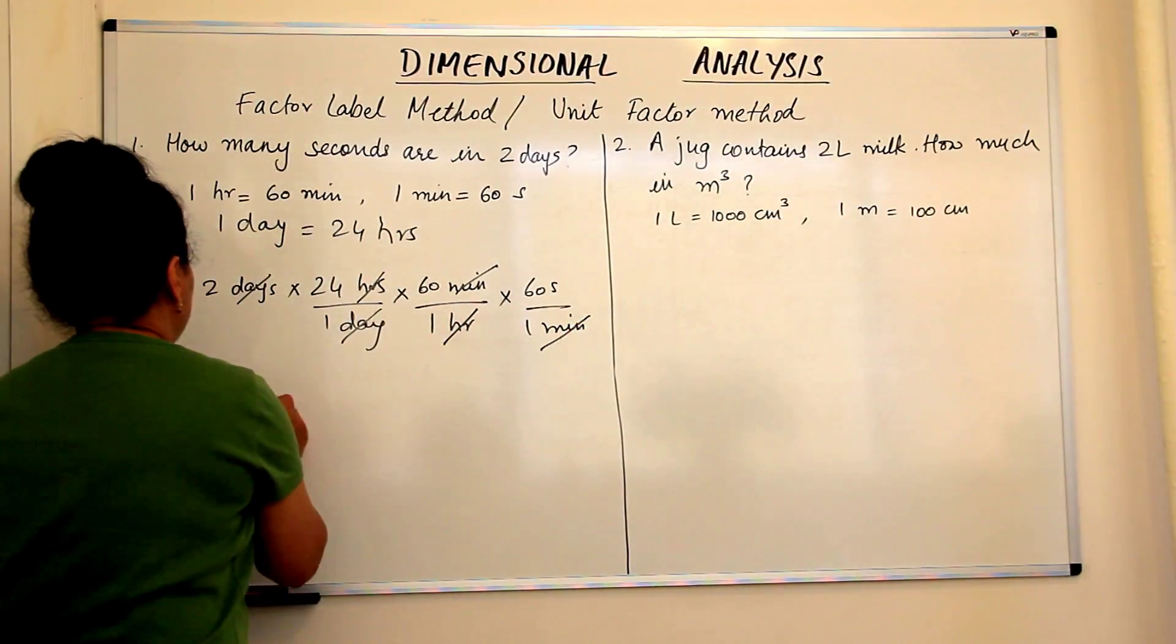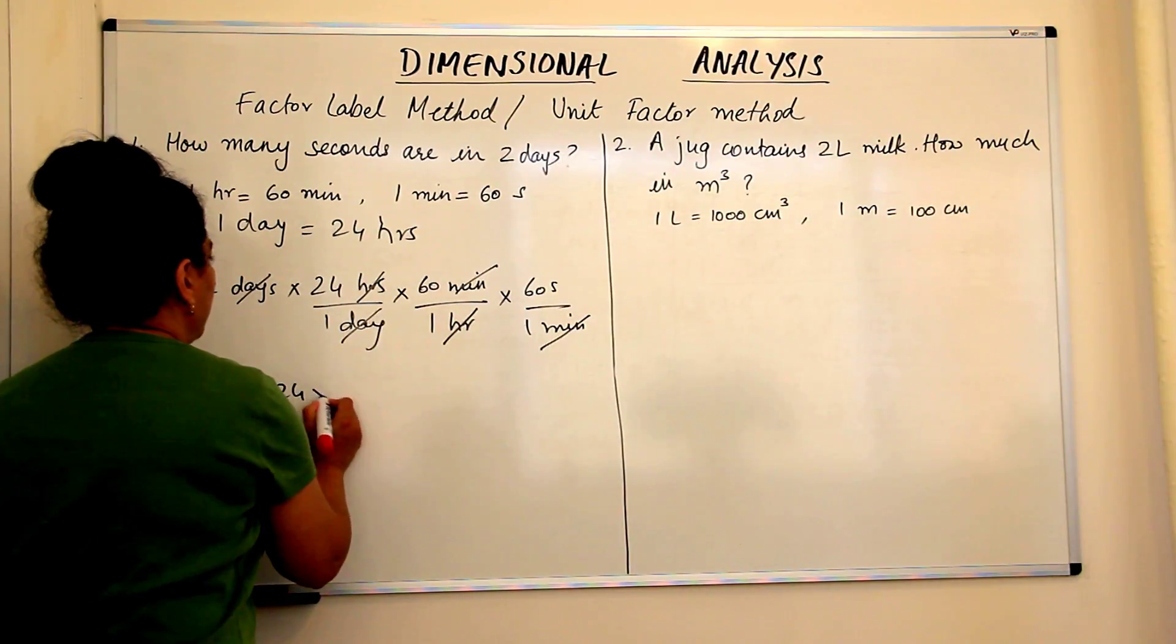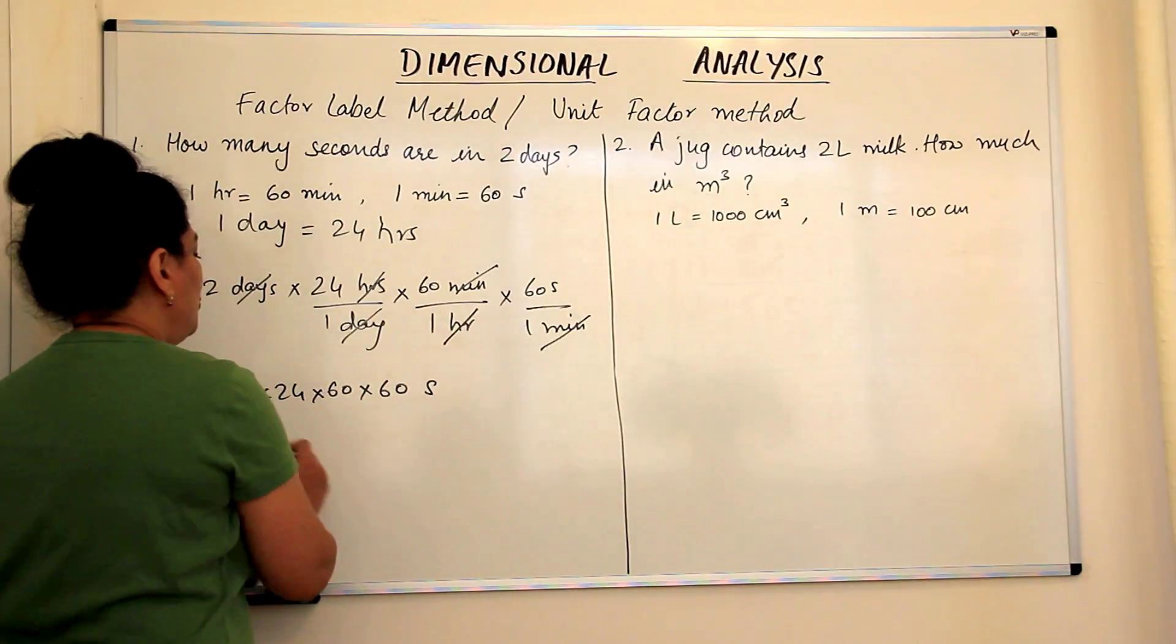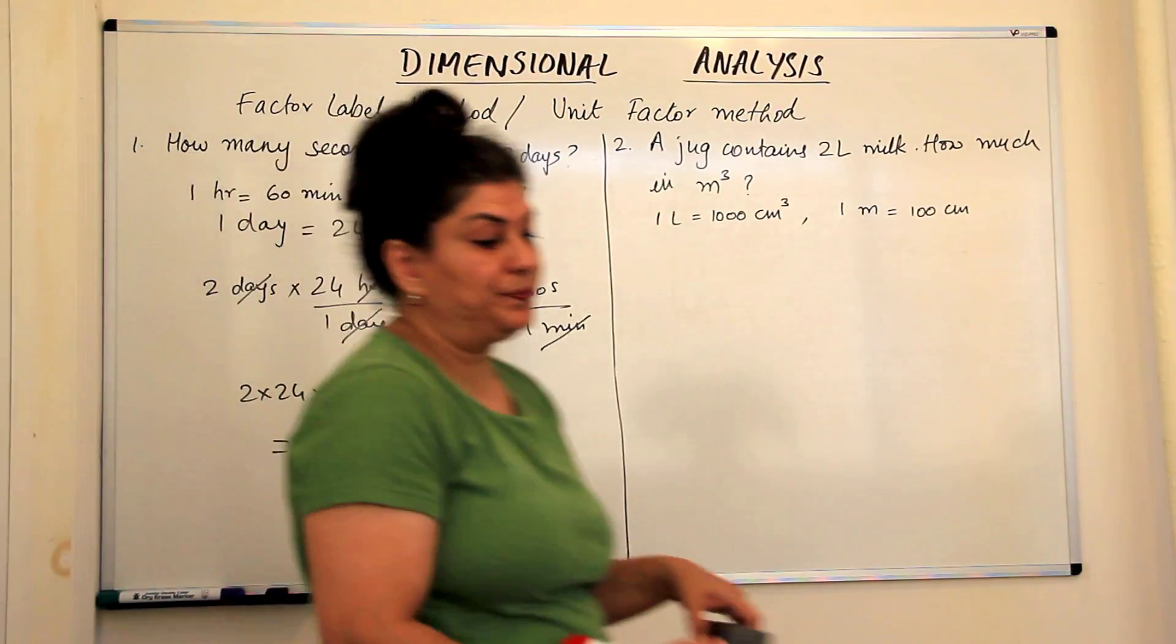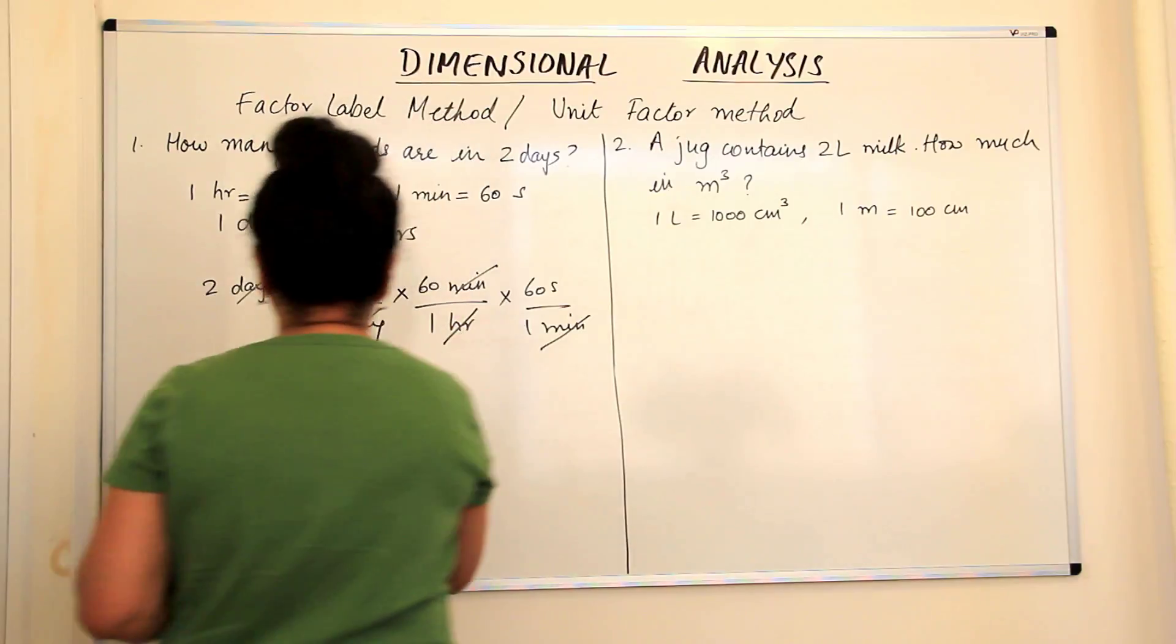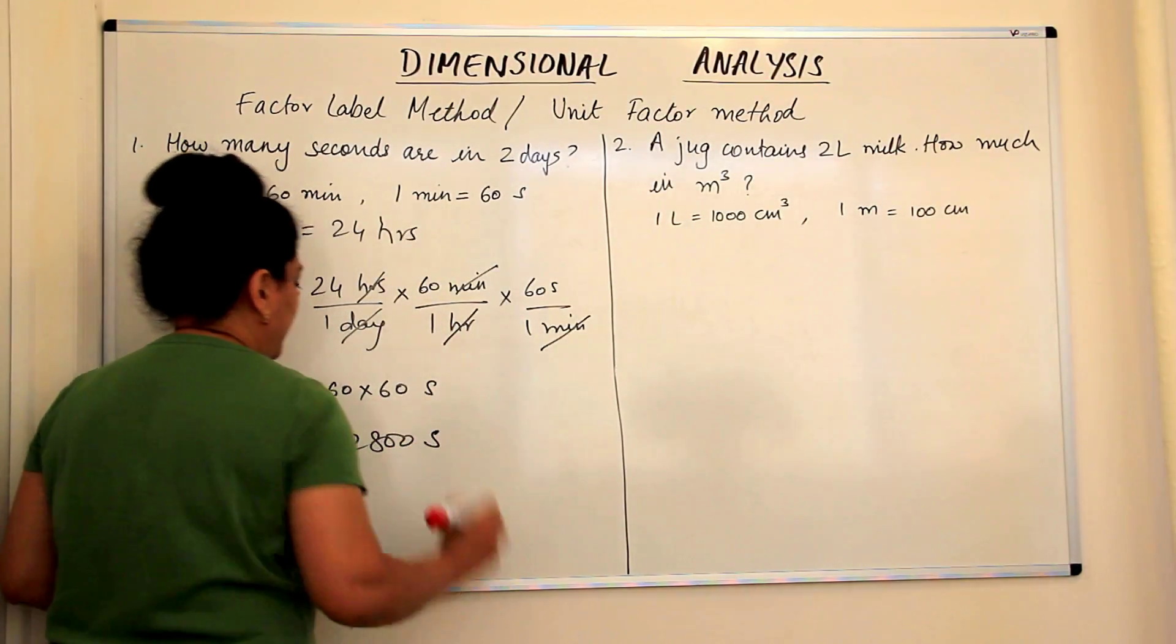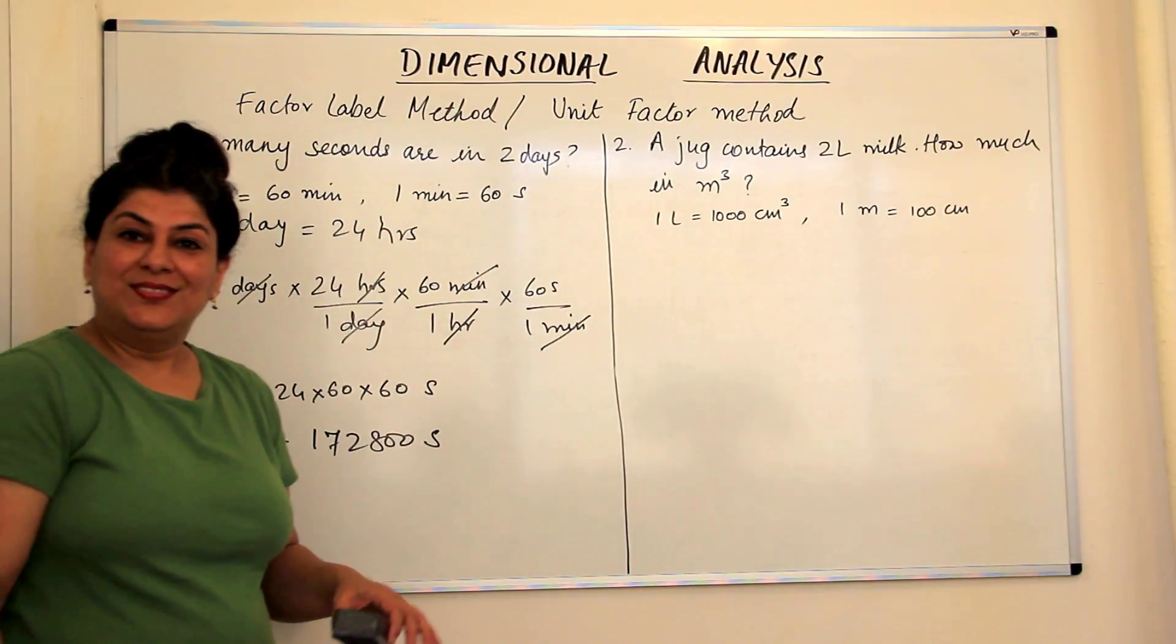So this time we get 2 into 24 into 60 into 60 seconds. So two days would be equal to 172,800 seconds. Right?